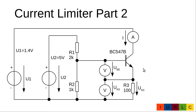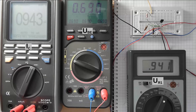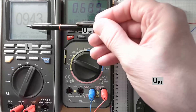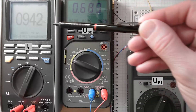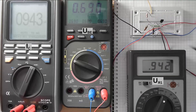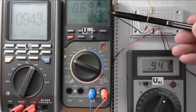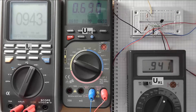We begin with the transistor stabilized at 20°C room temperature and a collector voltage of 1.4 V. We measure 9.43 mA into the collector, 690 mV at the base-emitter junction, and 942 mV across the current-sense resistor.